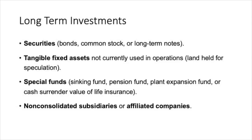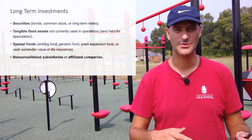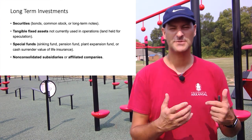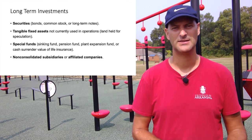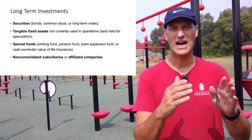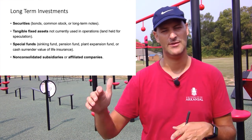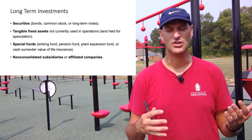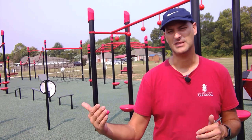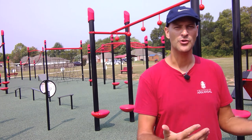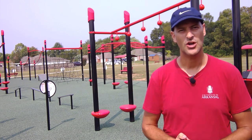Moving on to long-term assets, starting with long-term investments. These can be securities — common stock, bonds, long-term notes — or tangible fixed assets the company isn't planning on using in operations (which would be an investment rather than property, plant, and equipment). There can also be special funds such as pensions, sinking funds, and plant expansion funds, which highlight that a block of investments is being held for a very specific purpose. Non-consolidated subsidiaries or affiliate companies — equity investments representing more than just a security — also fall here.